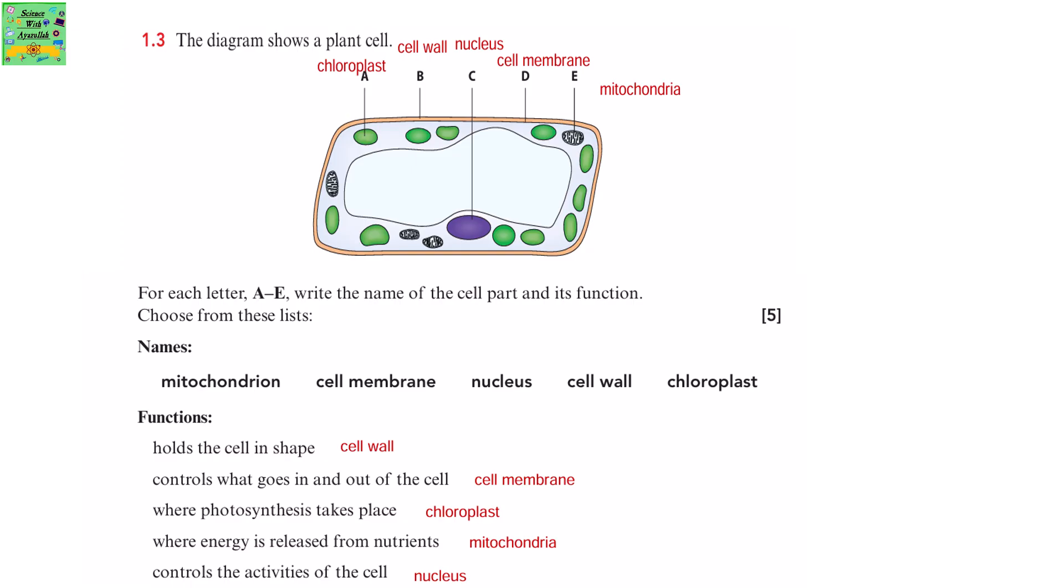Cell wall holds the cell in shape. Cell membrane controls what goes in and out of the cell. Chloroplast is where photosynthesis takes place. Mitochondria is where energy is released from nutrients. Nucleus controls all the activities of the cell.